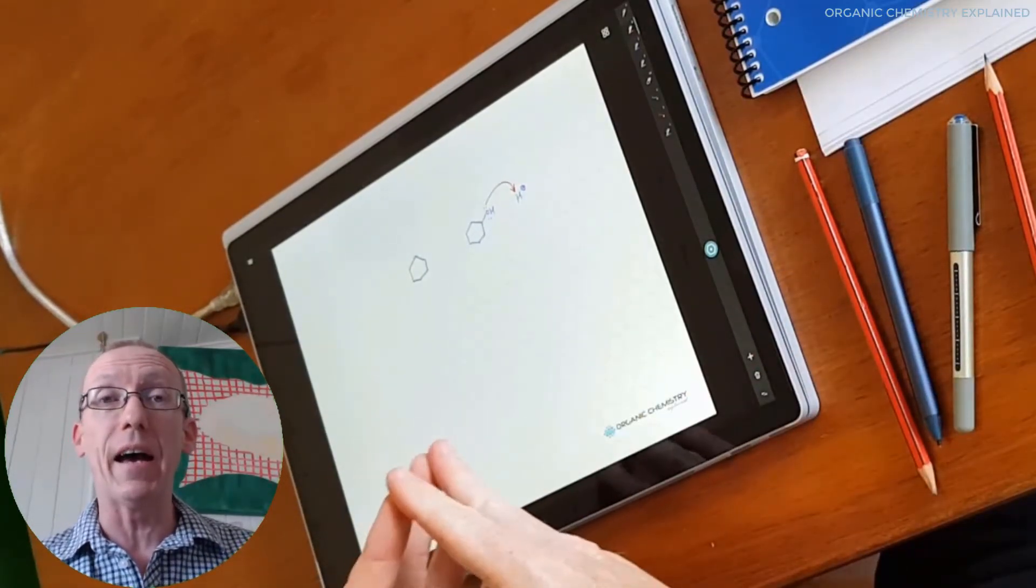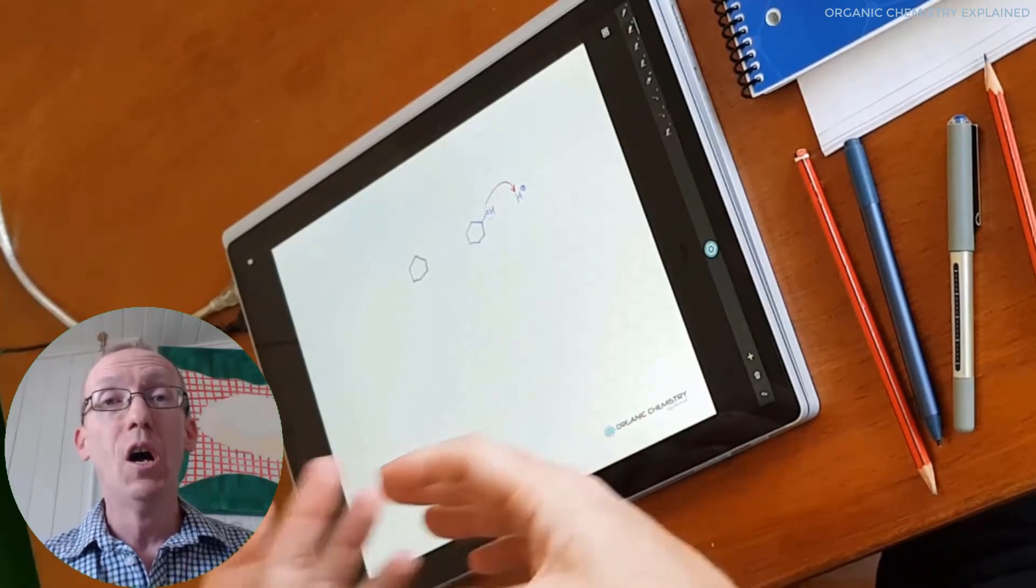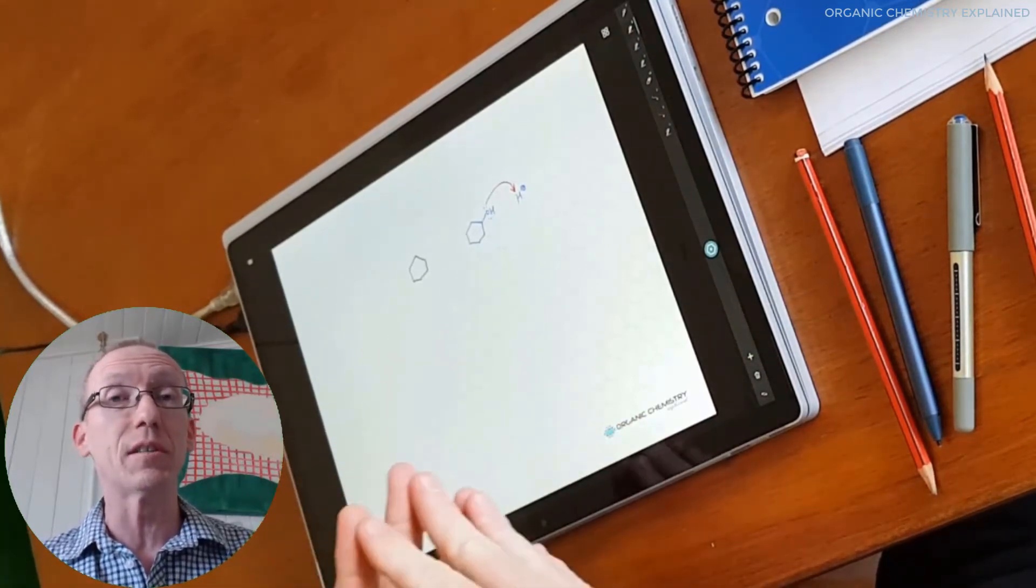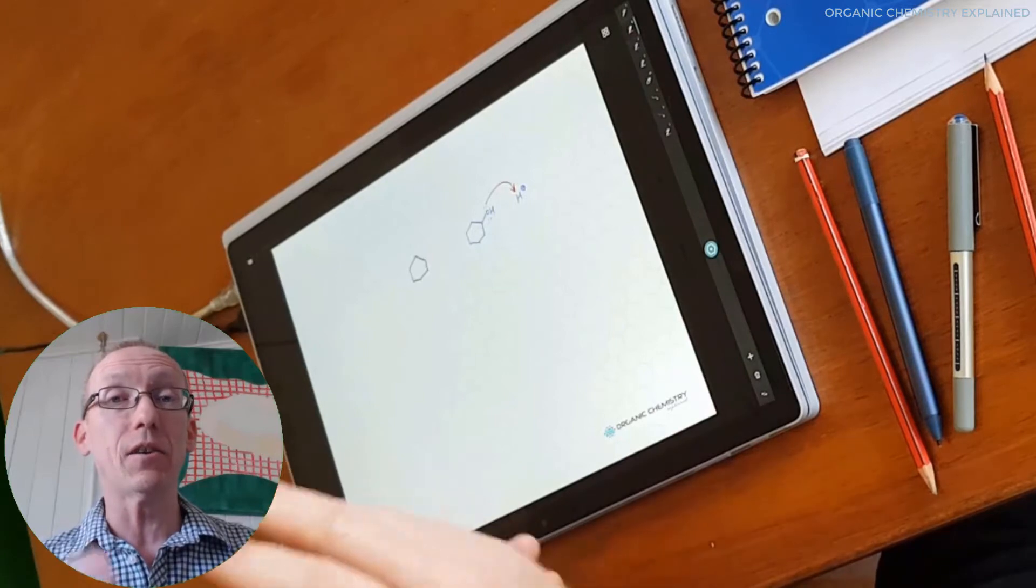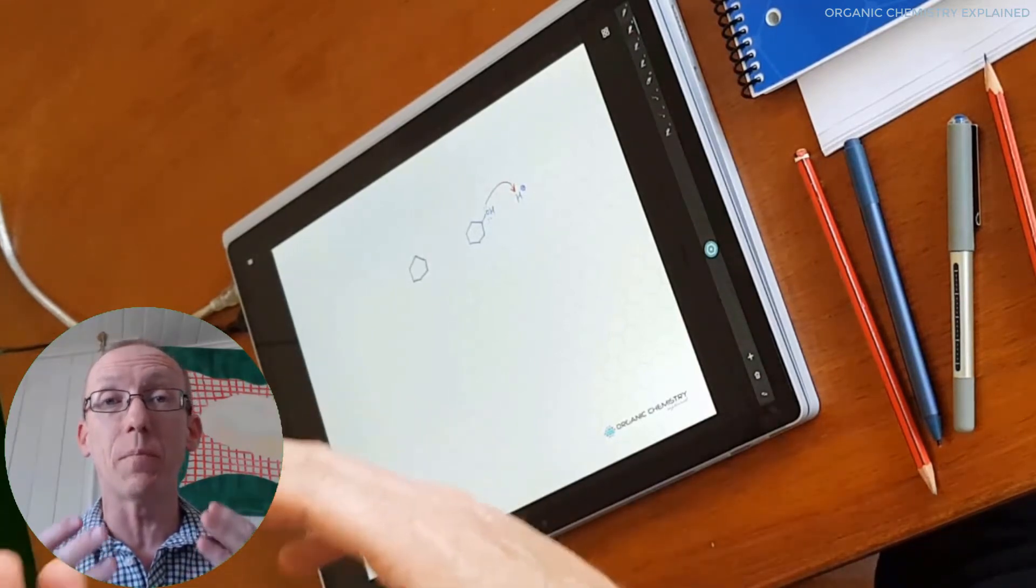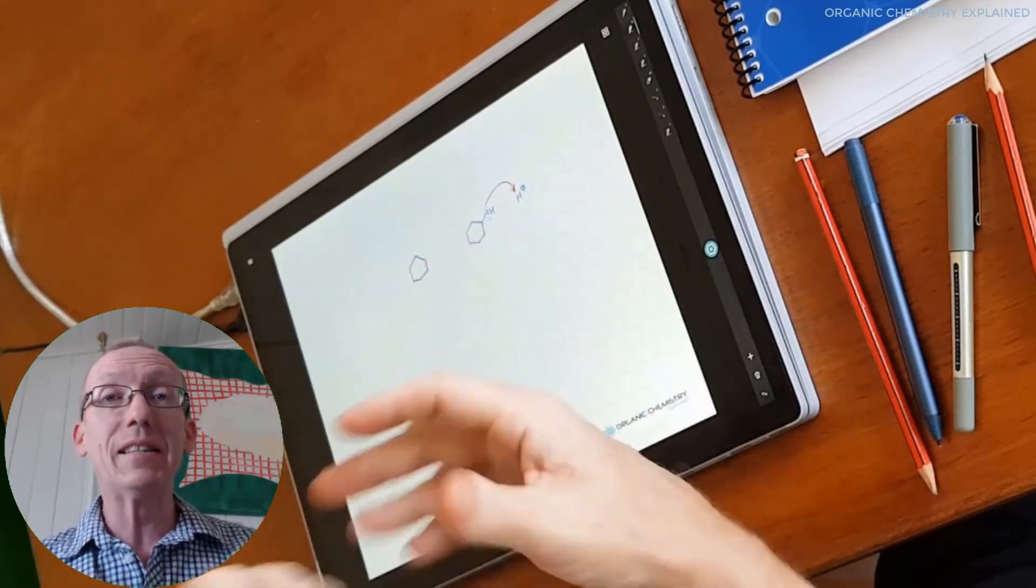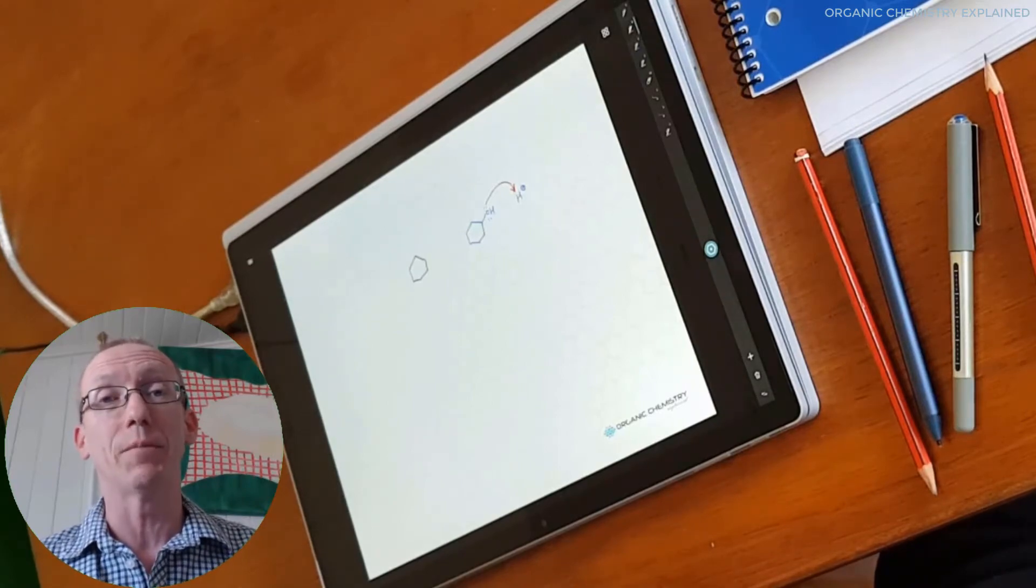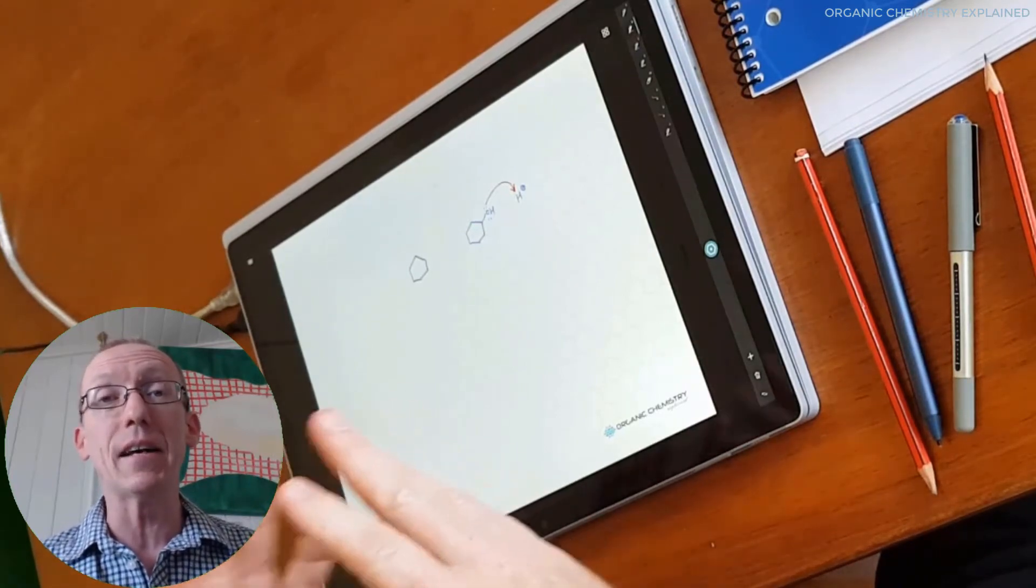So there you go. I hope you found this useful as a couple of options for helping you draw really nice organic chemistry structures. And they're structures that are going to get you the best marks in your exam because your professor will be able to read them and see what you're trying to tell him or her. Okay, so thanks a lot and good luck with your studies.